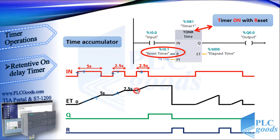When the third pulse appears and the ET values reach the preset time, the timer activates the Q output. The Q parameter remains set to 1 even when the signal state at the IN parameter changes from 1 to 0.